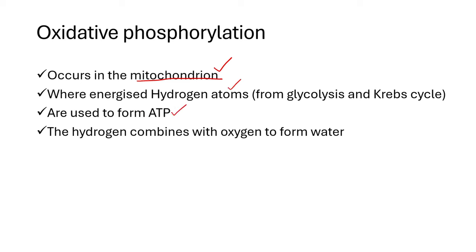Glycolysis also occurs in anaerobic respiration — remember that glycolysis is the process that does not need oxygen, so it occurs in both types. Glycolysis produces lactic acid in anaerobic respiration. In aerobic respiration glycolysis breaks down to pyruvic acid, but here in anaerobic respiration the glycolysis process results in the production of lactic acid. That lactic acid makes the muscles feel tired — when you are exercising and you suddenly feel tired, it is because lactic acid has accumulated in your muscles.